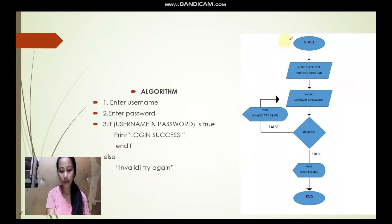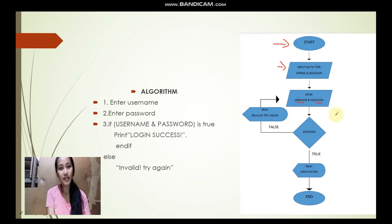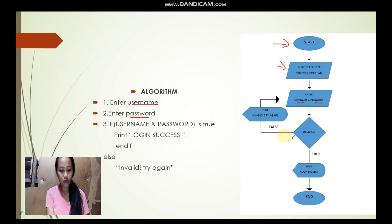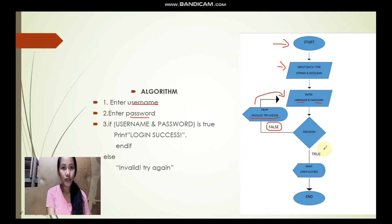Here in our flowchart, we have start and input data types — we use string and boolean. Boolean is used to control the while condition, which will be discussed in our next video. Next is to enter the username and the password. This is executed first before it checks whether the condition is true or false. If the decision is false, it will display 'invalid, try again,' and we return to enter the username and password again. If still false, it will just be executed repeatedly.